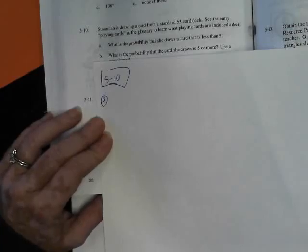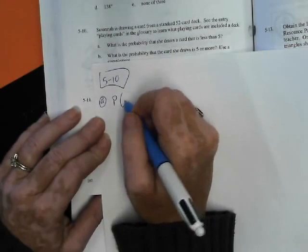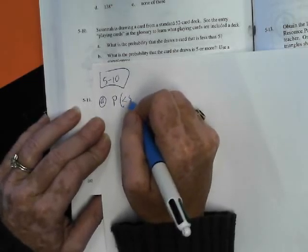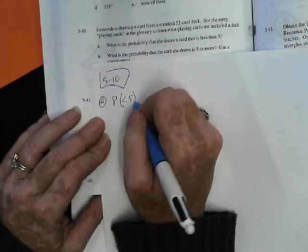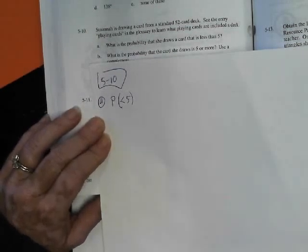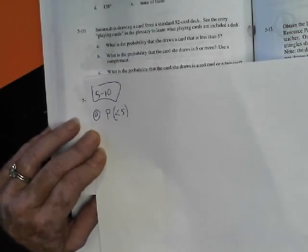What is the probability she draws a card less than 5? So I'm going to write it in this notation. I'm going to write, how do I write that? Less than 5, right? Something like that. I should have just written out less than 5.